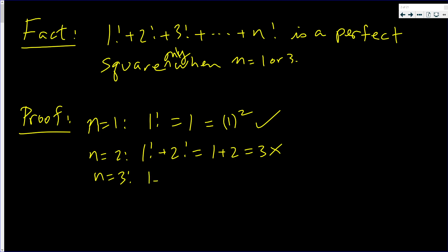Now, when n is three, you have one factorial plus two factorial plus three factorial, which is one plus two plus six, that's nine. That's three squared.